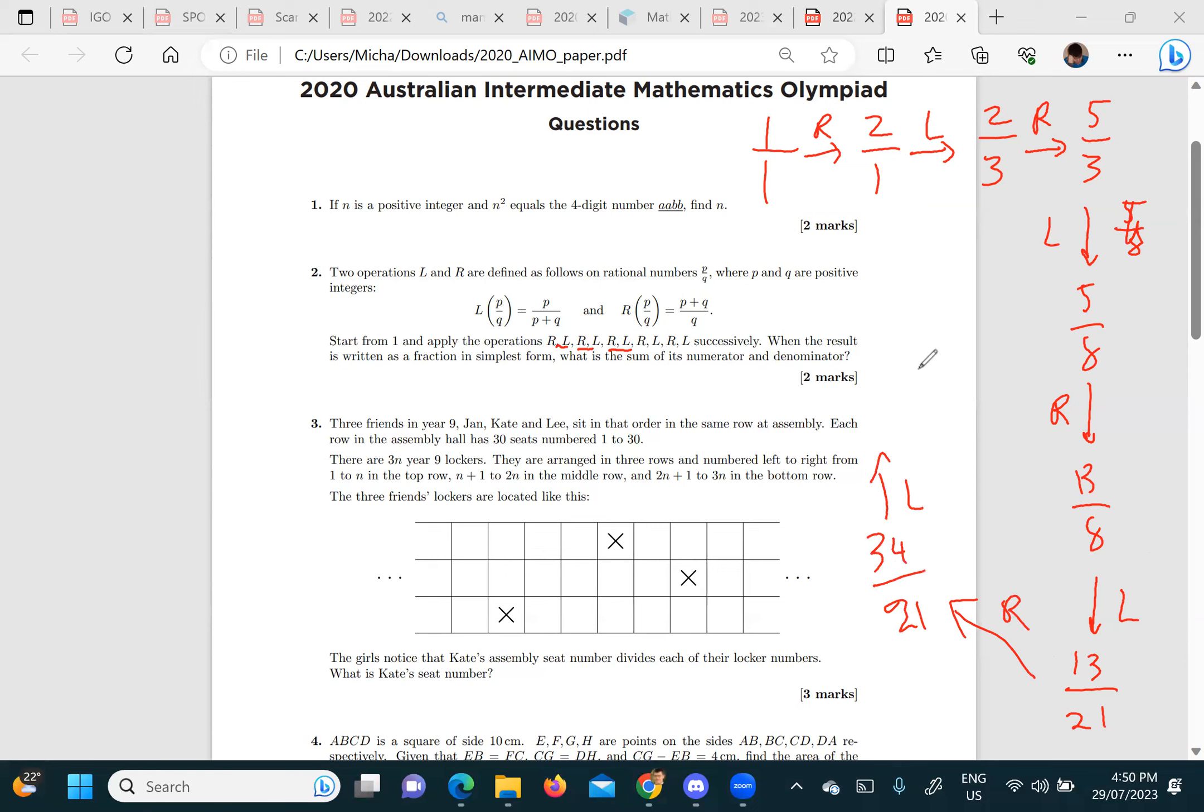21, then 34. Then L is 55. And then we do two more—so there's 89. And then 89 on 144.